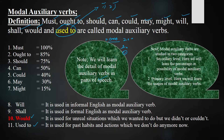Modal auxiliary verbs are studied in two categories. The first is called the secondary level and the second is called the primary level. In the secondary level, you learn the percentages of possibility: must 100%, should 75%, can 50%, could 40%, may 30%, might 15%, and will 50% for future possibility. Shall is also for future possibility at 50% — one is informal and the second is formal.